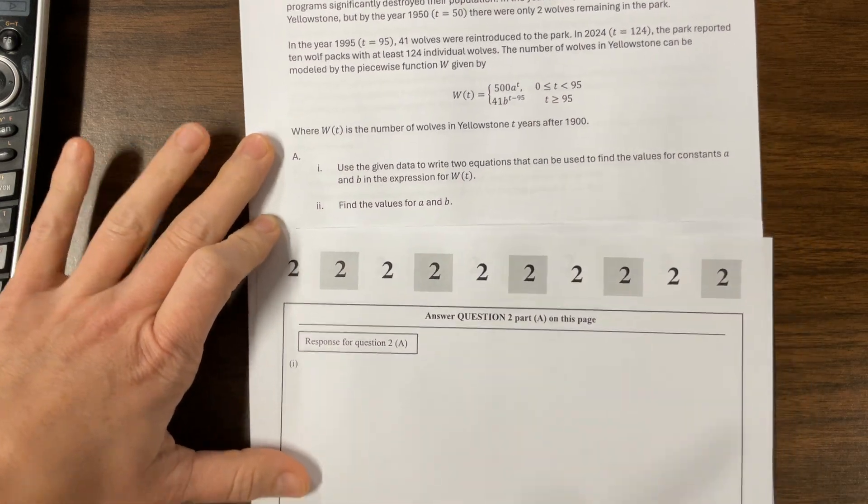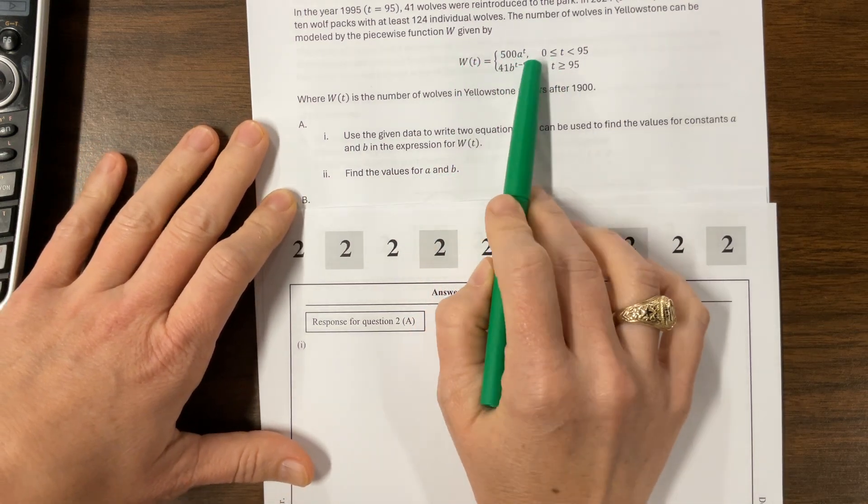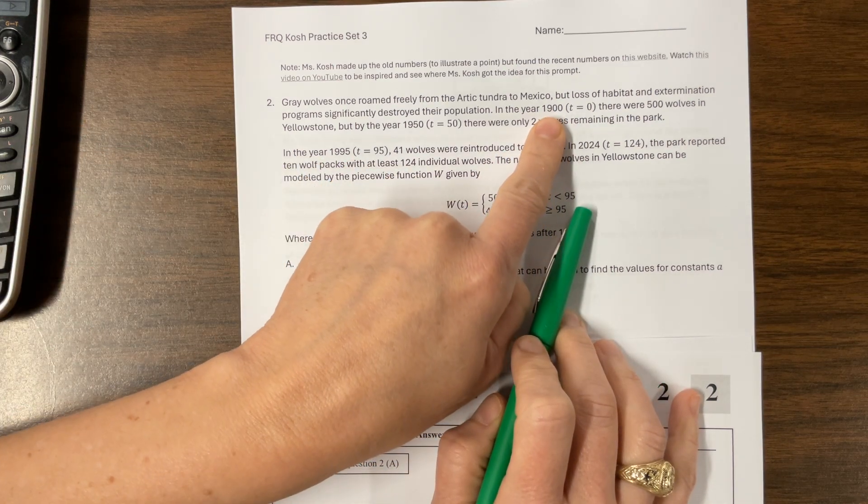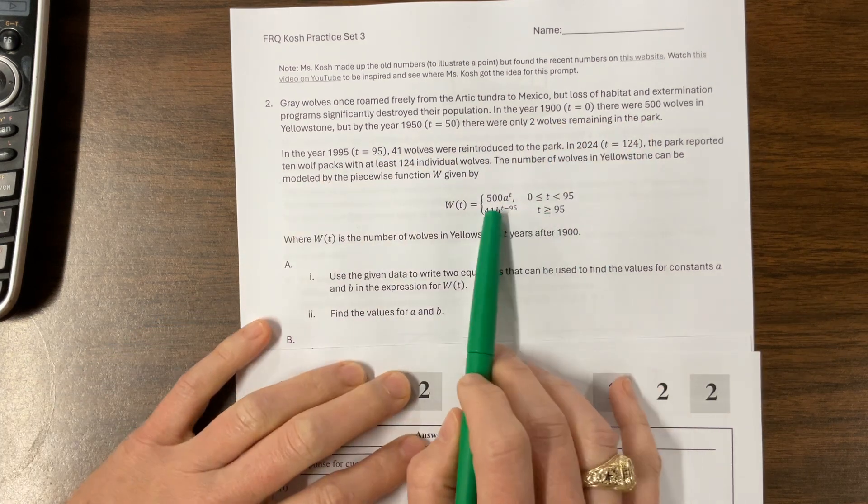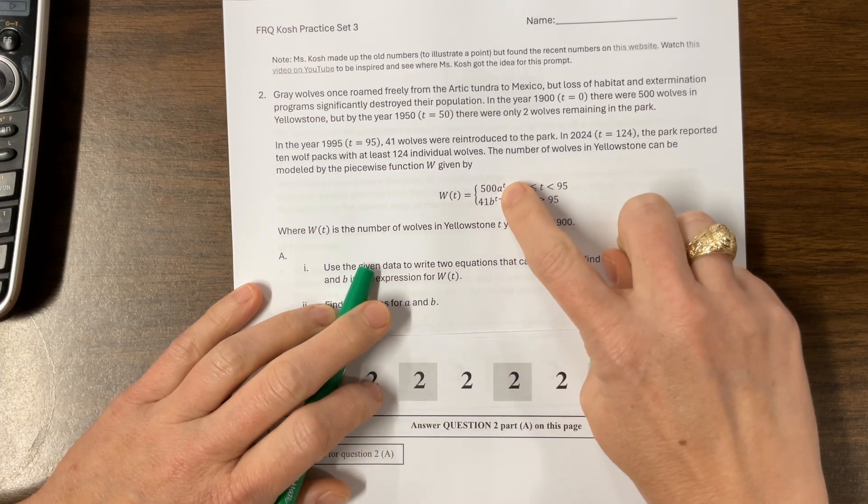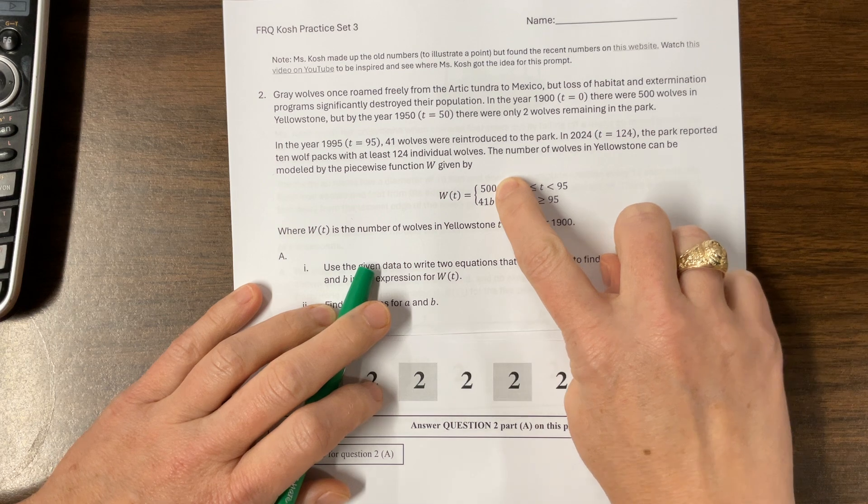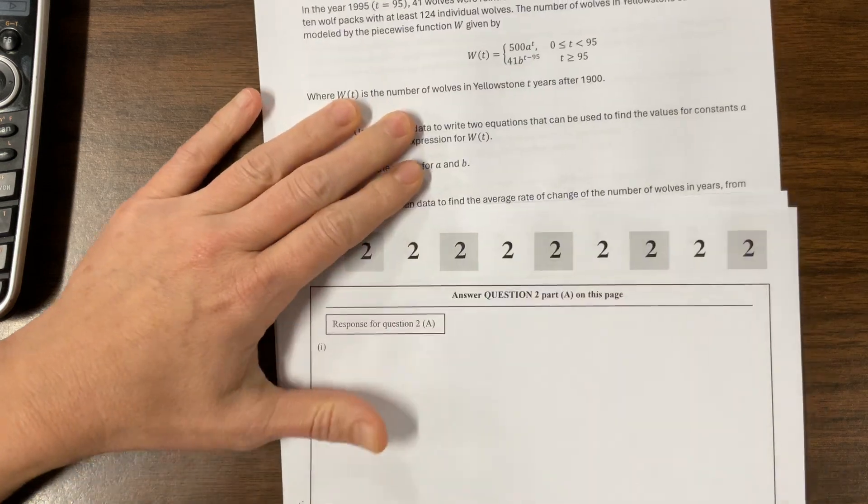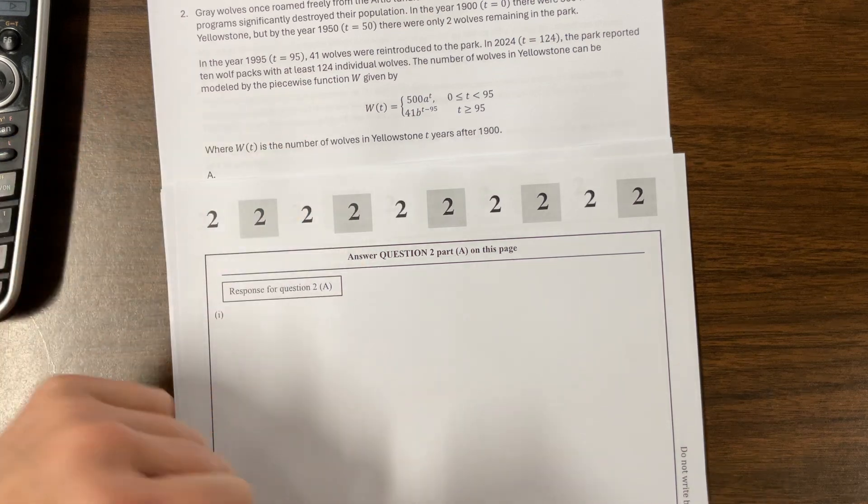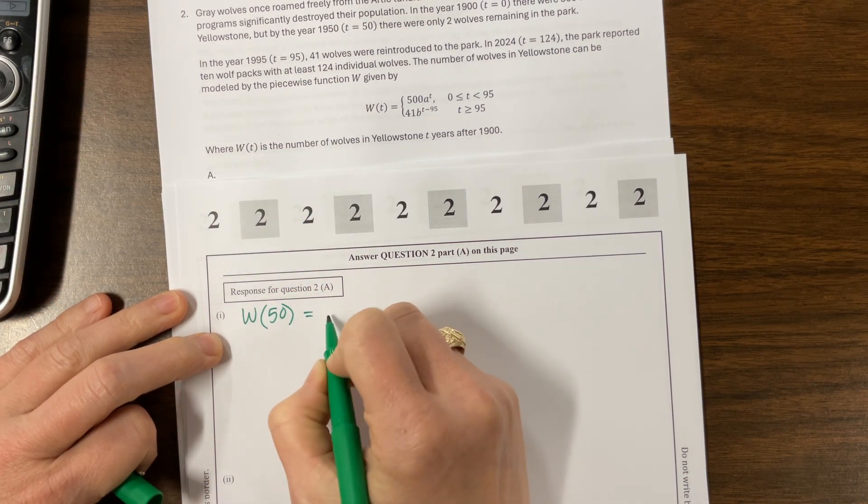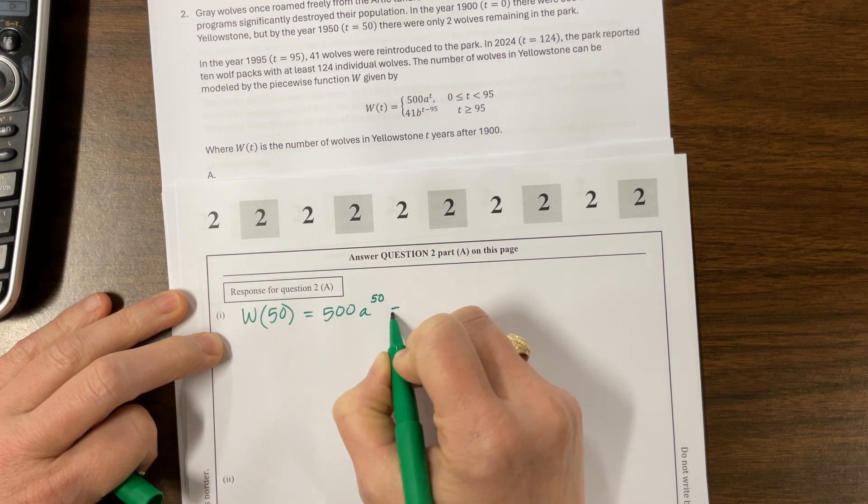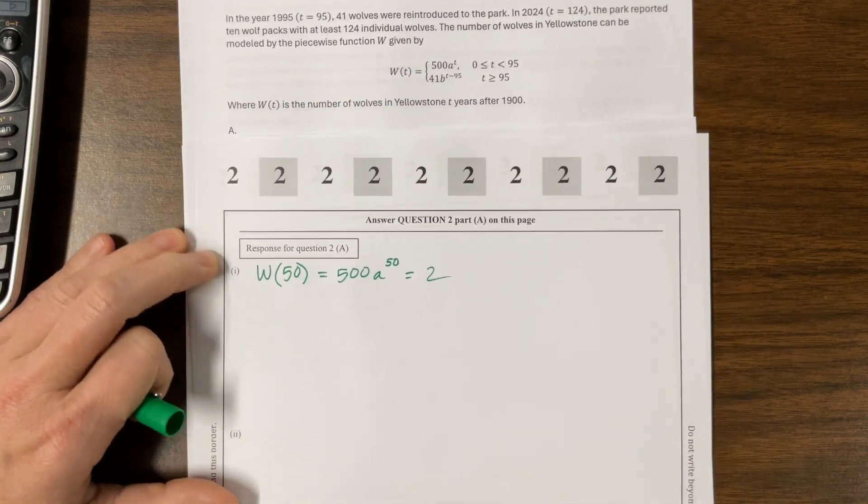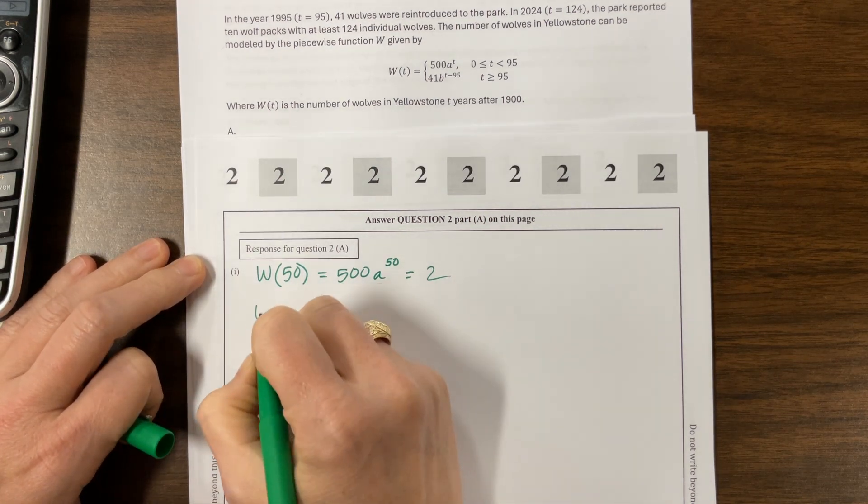Okay, so the first thing, where t is years after 1900, the first thing they want us to do is to write two equations. So what we know, to find a, we have to use this top equation, which will involve data between 0 and 95. And so what data did they give us? They told us that in 1900 there were 500 wolves. Notice when I plug in 0, what's going to happen here is that a to the 0 power becomes 1, and it's just 500. So that part of the equation does not help me solve anything. So I need to use the second part, and that is what I would write. What I would write is I would say W(50) is equal to 500a^50, which would be equal to what I said in this problem. This is the part I made up. Just go with it. There were two wolves. Okay, so there's that first equation. That's going to help us solve for A.